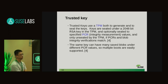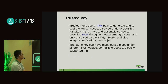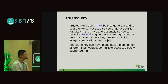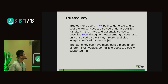The same key can have many saved blobs with different PCR values. Because maybe your machine can boot with different kernels, and if you still want to use the same key, you can encrypt — seal — those blobs with different PCR values. This picture shows the flow in the kernel to create a trusted key. A new key is requested from the random number generator in the TPM, giving us a random number that will be the key payload. Then we read the PCR and produce a PCR information structure.